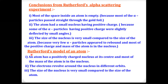From these three observations, Rutherford drew three conclusions: first, most of the space inside an atom is empty because most alpha particles passed straight through the gold foil. Second, the atom has a small nucleus with positive charge, because some alpha particles were slightly deflected. Third, the size of the nucleus is very small compared to the size of the atom, which is why very few alpha particles appeared to rebound. Most of the positive charge and mass of the atom resides in the nucleus.